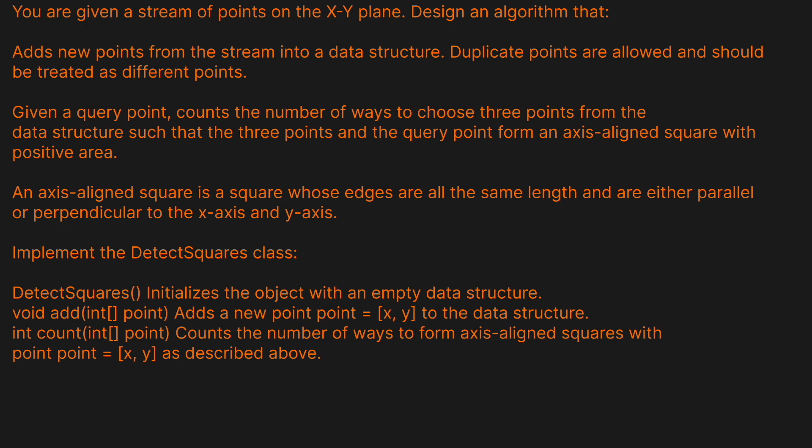We want to implement the DetectSquares class, which will initialize the object when called. We'll also have an `add` method which takes a point and adds it to the data structure, and a `count` method which counts the number of ways to form an axis-aligned square with the point XY as described above.